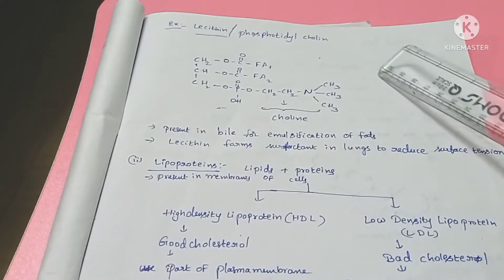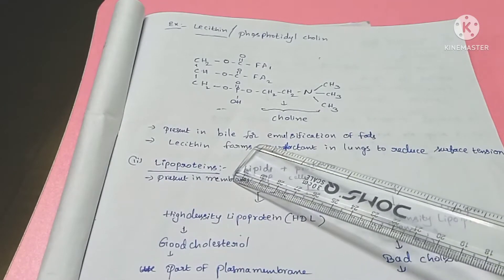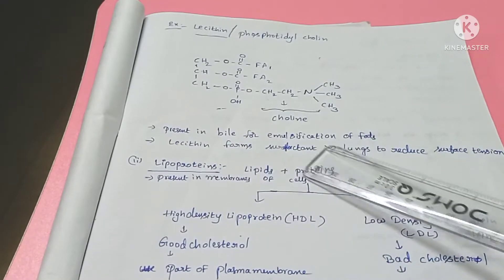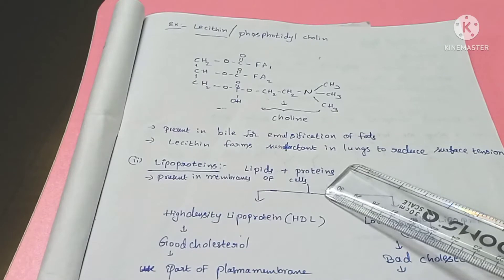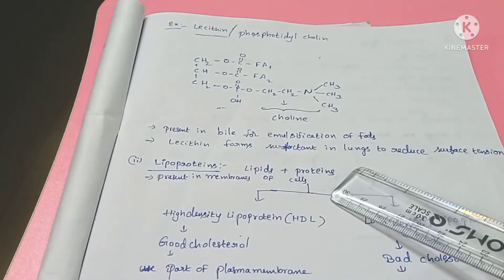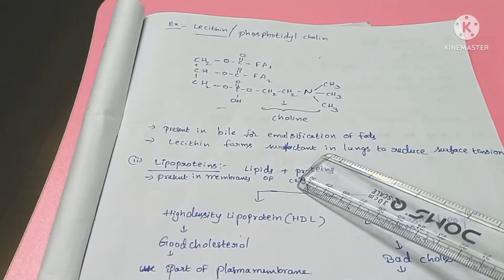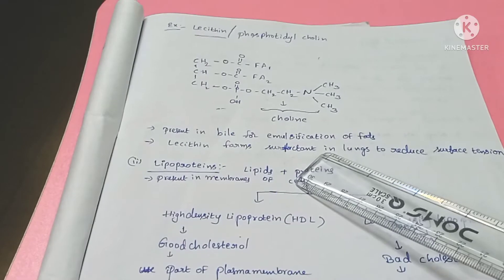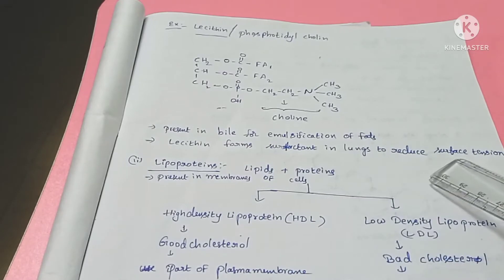Lecithin is present in bile, where it aids in the emulsification of fats. It also acts as a surfactant in the lungs, reducing surface tension and allowing free flow of oxygen from the lungs.